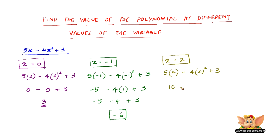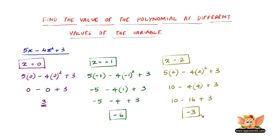5 into 2 is 10, minus 4 into 2 squared — 2 squared is 4, so that makes it 4 into 4 plus 3. So 10 minus 4 into 4 is 16 plus 3: 10 minus 16 is minus 6, and minus 6 plus 3 is minus 3. Therefore, the value of 5x minus 4x squared plus 3 when x equals 2 is minus 3.